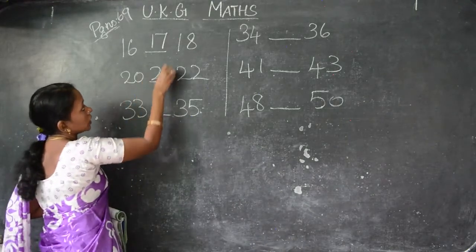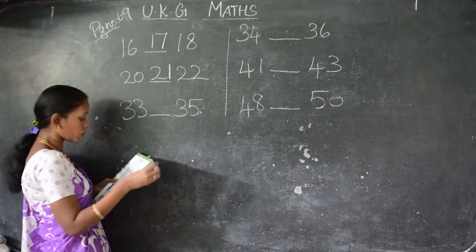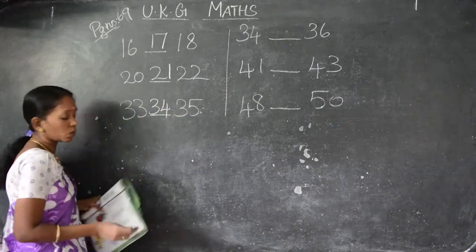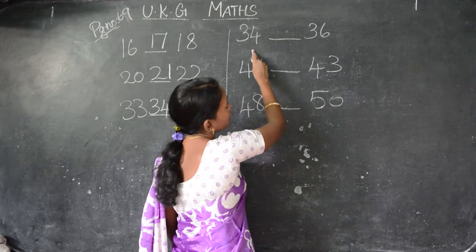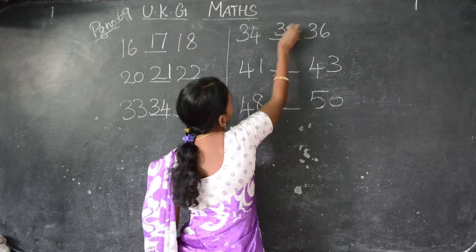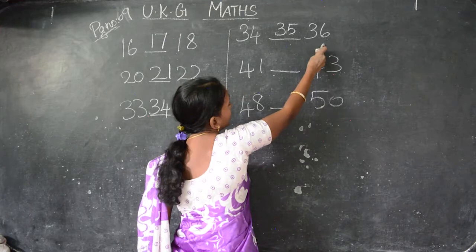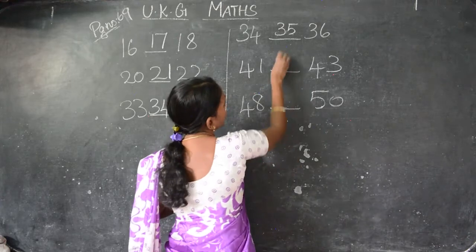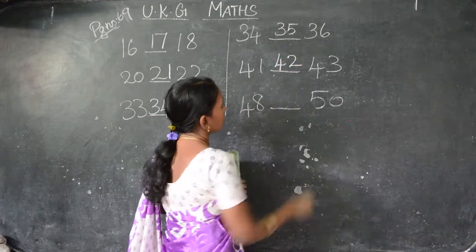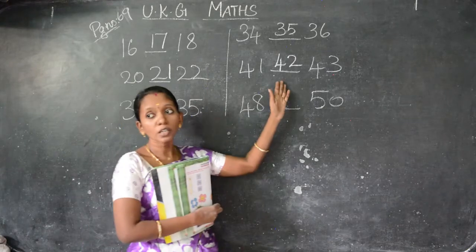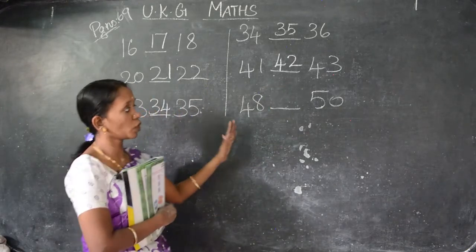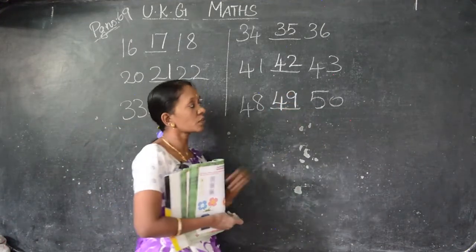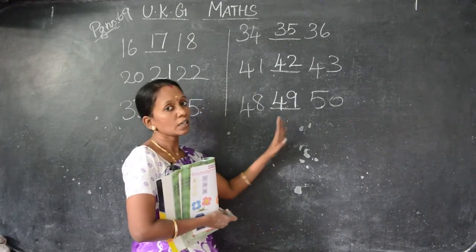After 20, what will come? 21. Write it down in your book. After 33 is 34, before 35 is 34. After 34 is 35, before 36 is 35. After 41, what will come? 42. Before 43 is 42. At last, 48 is there. After 48 is 49. Before 50, what will come? 49.